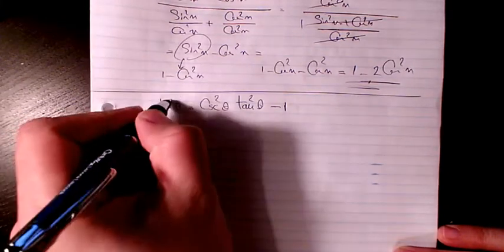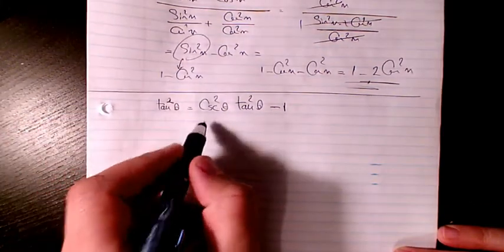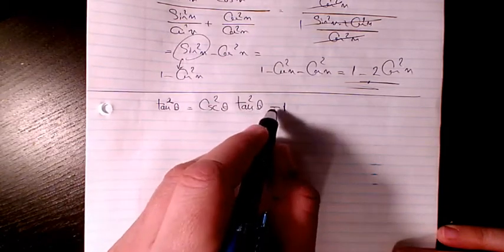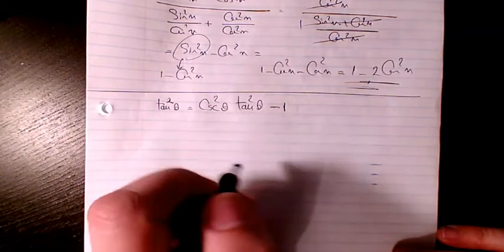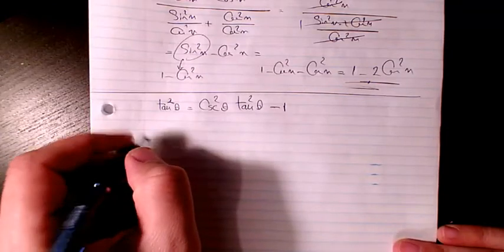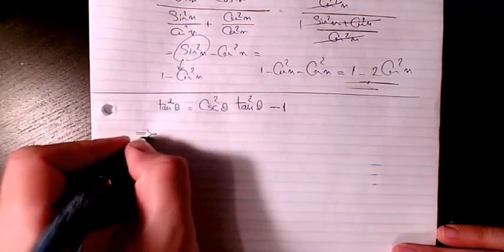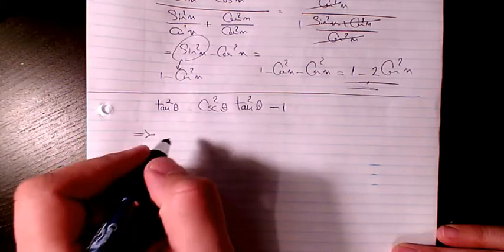This video I have tan squared theta equals to cosecant squared theta times tan squared theta minus 1. So I want to verify this identity. I start from the right hand side.